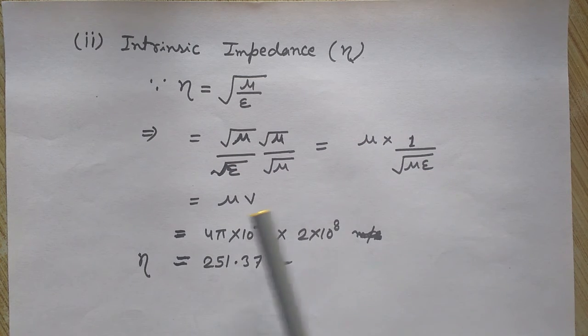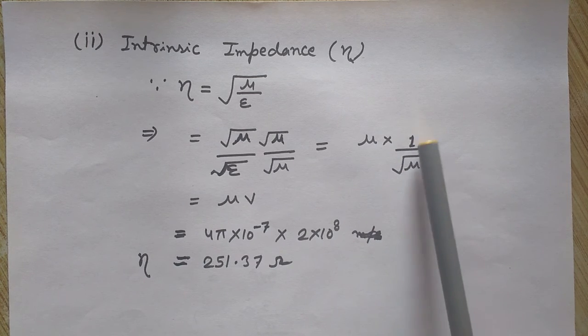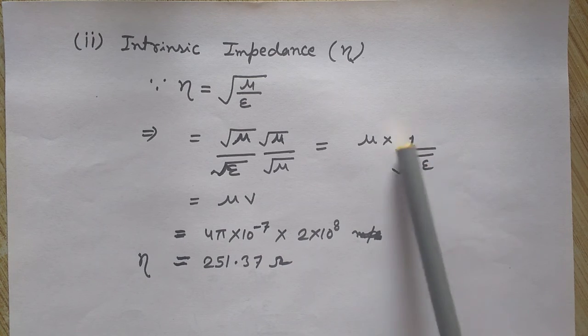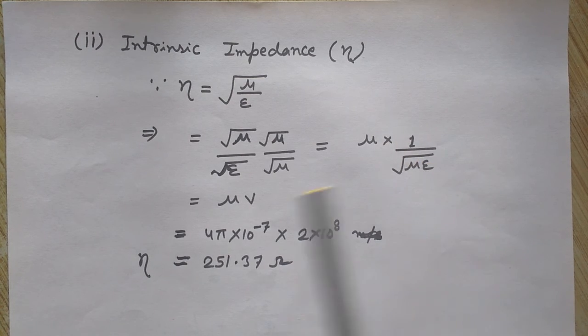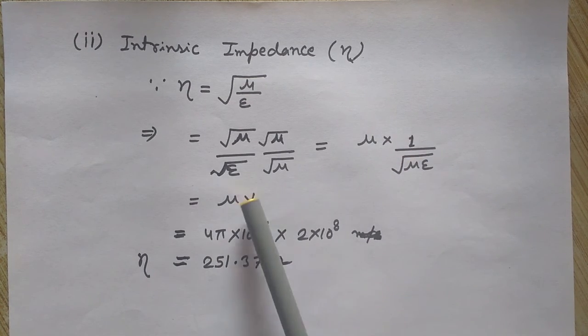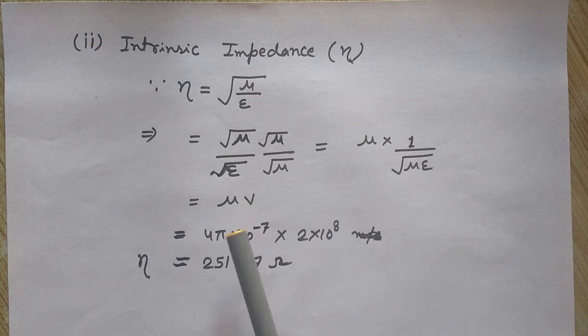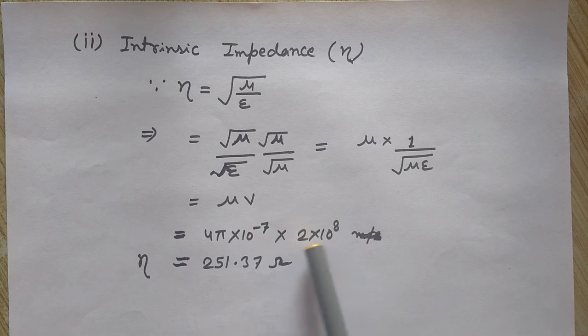I know that 1/√(με) is v, the velocity of propagation. So I can write η = μv. Since I have already calculated v = 2 × 10^8 m/s...